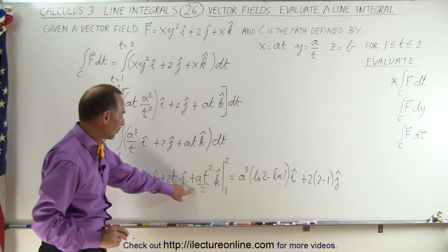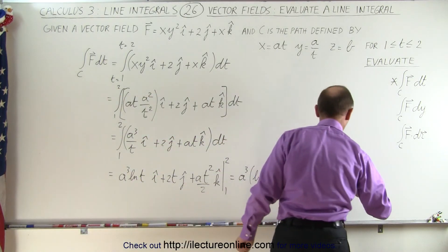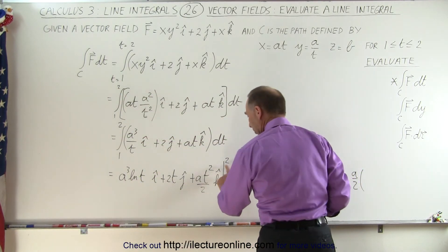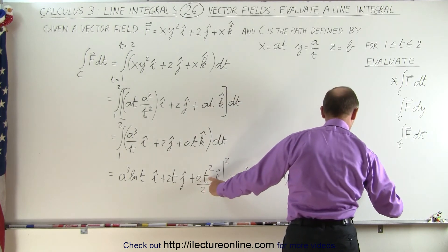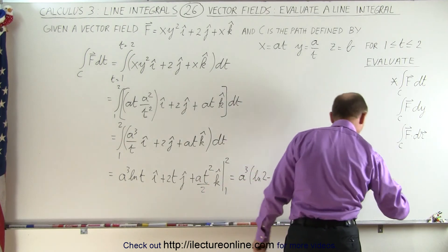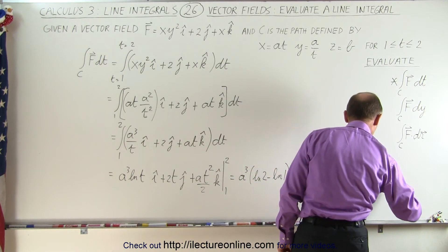And then finally, this one right here, that would be plus a over 2. Plug in the upper limit, we get 4 minus, when we plug in the lower limit, we get 1. And that's in the k direction.